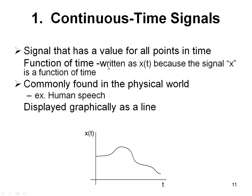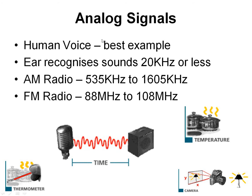Coming to the major classifications: continuous time signals and discrete time signals are the most important classification a student must know before entering into signals and systems. A continuous signal has a value defined for all points in time, represented as x(t), where t is the independent variable. Commonly found in the physical world — for example, human speech — this is the graphical representation of a continuous signal. An analog signal: human voice is the best example of an analog or continuous signal.